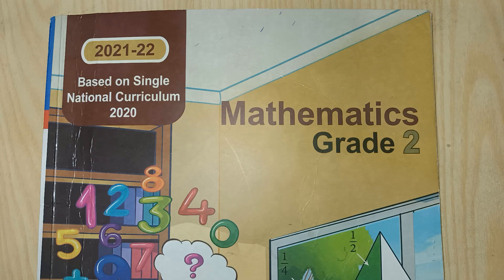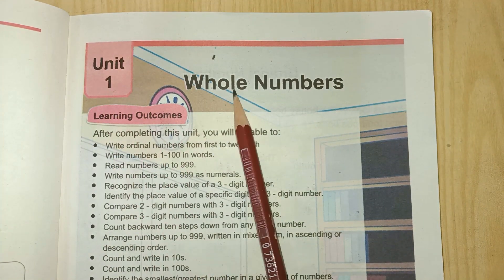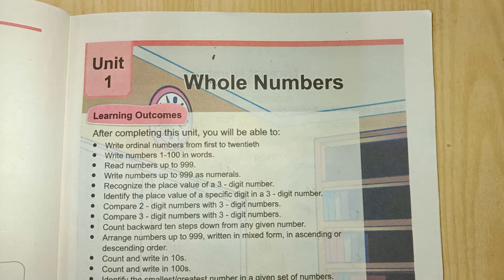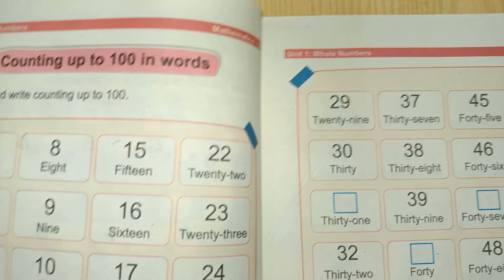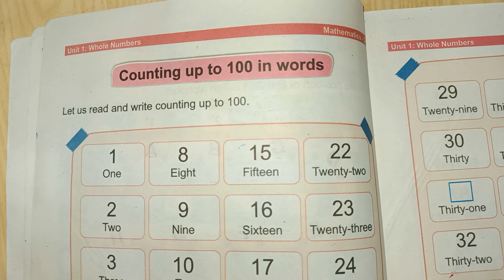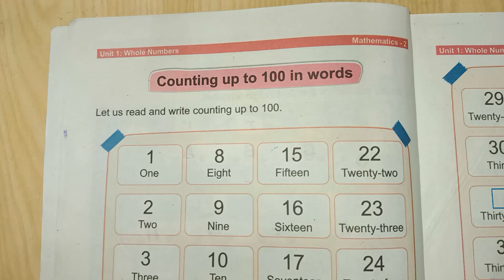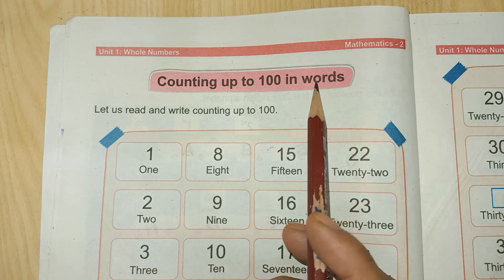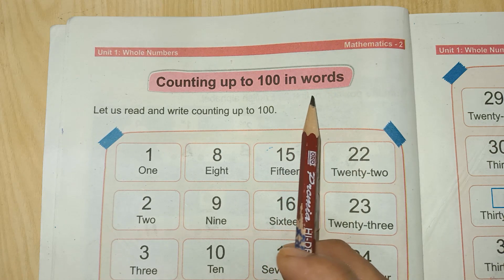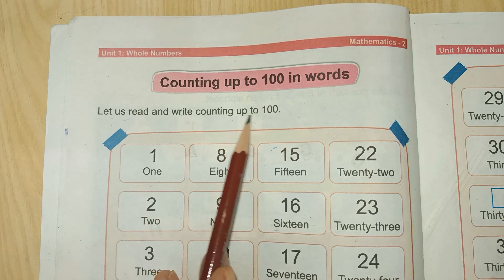Assalamu alaikum students, welcome to our YouTube channel Book Mathematics Grade 2. Unit 1: Whole Numbers, page number four to seven. Counting up to hundred in words — let us read and write counting up to hundred.